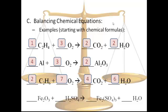Doubling everything: the first coefficient becomes two, three and a half becomes seven, two becomes four, and three becomes six. Now all coefficients are whole numbers and it still works. Check: four C's on both sides, twelve H's on both sides, and fourteen O's on both sides (eight plus six on the right). If you ever get a half-number like three and a half or two and a half, double all the coefficients and you'll be all set.